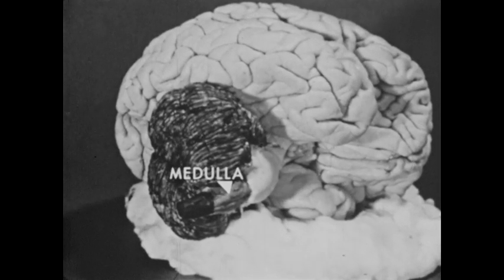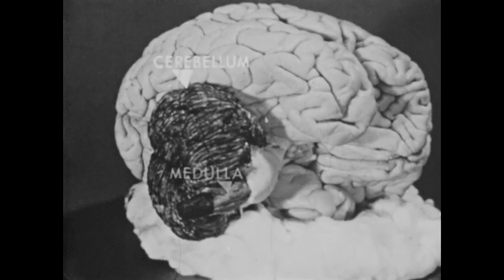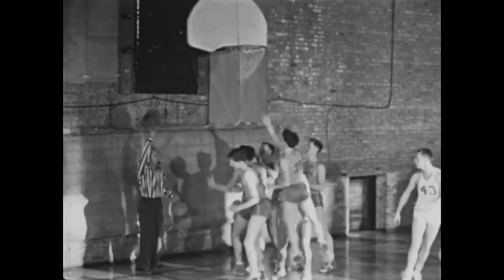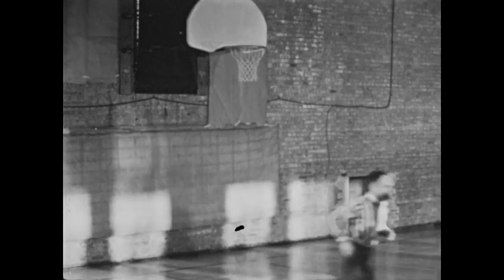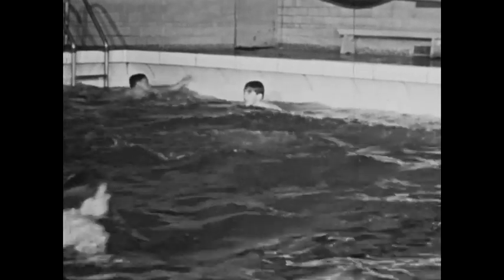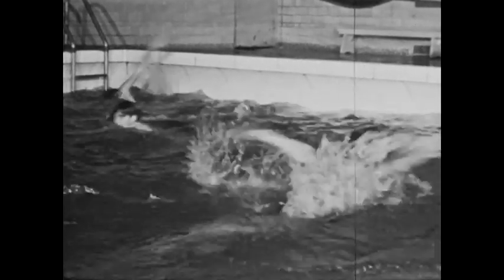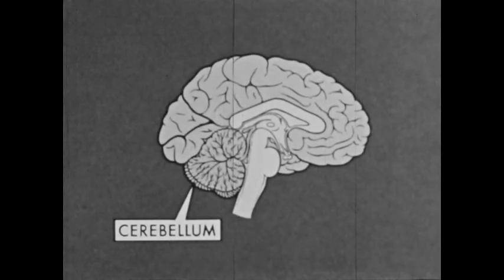Just as the medulla coordinates the organs of your body, the cerebellum coordinates the muscles of your body — the many complex movements your body performs every day. Whether playing a fast game of basketball or simply walking, whether diving, swimming, or merely standing, or just picking up something you've dropped, the hundreds of muscles involved in body activities are coordinated by this amazing portion of the human brain — the cerebellum.